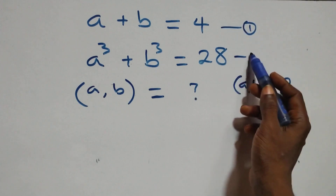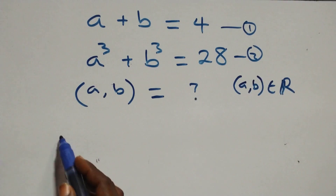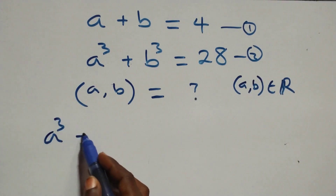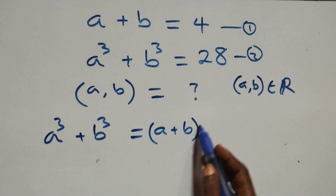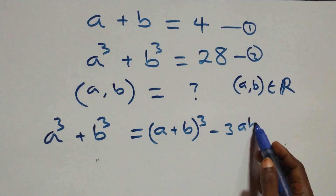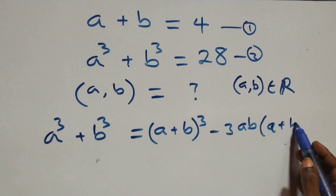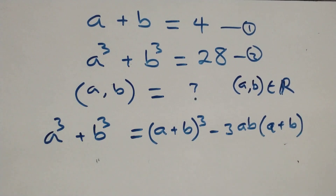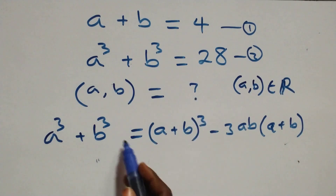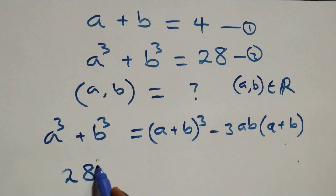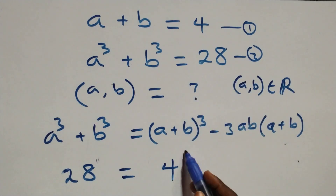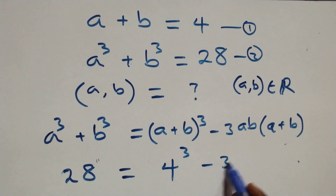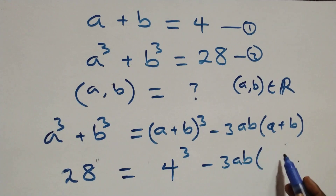Let's label this as equation 1 and this as equation 2. We can make use of the identity: a cubed plus b cubed equals (a plus b) cubed minus 3 times ab times (a plus b). From equations 1 and 2, substituting, we have a cubed plus b cubed equals 28, and (a plus b) equals 4.